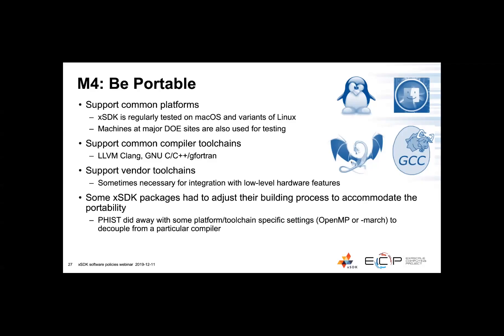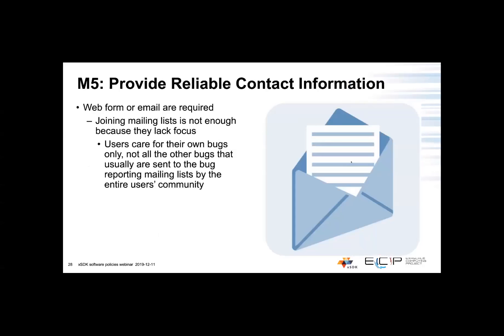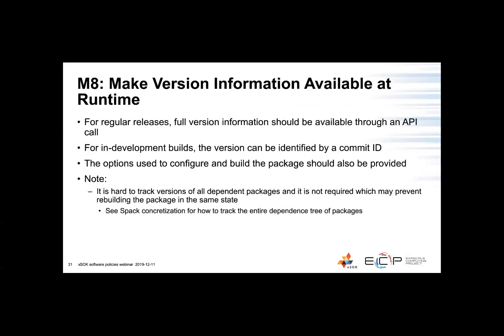Next question regarding mandatory policy number eight: can version information be provided via a macro, or does it need to be an actual function call? That's an often-asked and very good question. If there's only a macro available, the macro does not apply to the libraries that are on the system, and sometimes there might be issues between the headers being included and the libraries being linked. As part of this policy, it is explicitly required to have a function call in the library with the version information literally inserted in the source code, put in an object file, and inserted in the library. Yes, it has to be a function call.